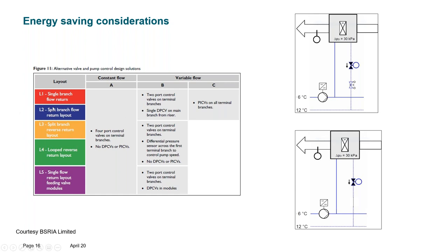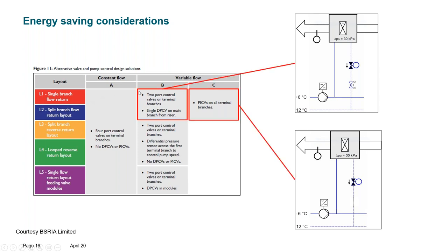This is a summary from the BSRIA report. Comparing two different valve sets: the first — a static control valve with manual balancing valve, plus differential pressure control valves in the riser — and the second — a PICV arrangement without manual balancing valves and without DPCVs. We can check to what extent energy savings improve when mixing the right combination of valves with the correct pump control strategy.